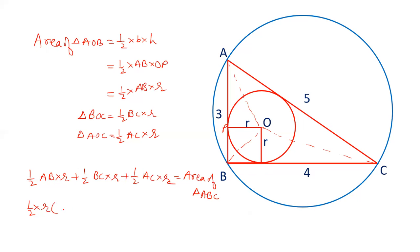AB, BC plus AC. This is the perimeter. Area of triangle ABC. So r is equal to area of triangle ABC upon half into AB plus BC plus AC. This is the perimeter and half of perimeter is known as S, semi-perimeter.